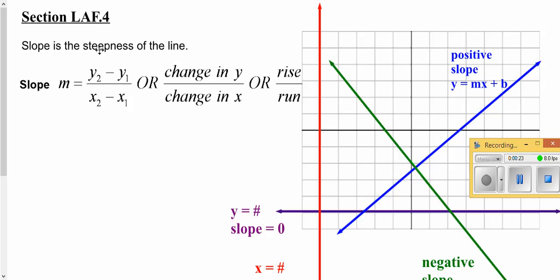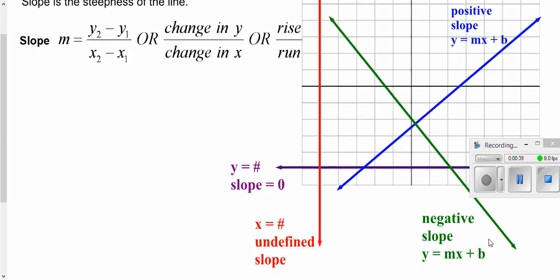Now there's really four different types of lines. There's lines that go up as you go to the right and they are in the form of y equals mx plus b and have a positive slope. And then there are lines that go down as you go to the right and those have a negative slope but also in the form of y equals mx plus b.